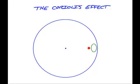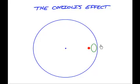Let's imagine that you are on a huge turntable, like a record player for giants. Here it is drawn in blue. You are the green oval. As you ride on the turntable, you have a red ball with you. For the sake of argument, let's say that the turntable is spinning counter-clockwise.